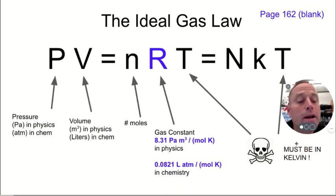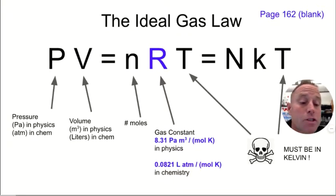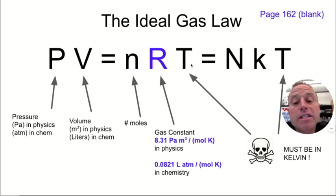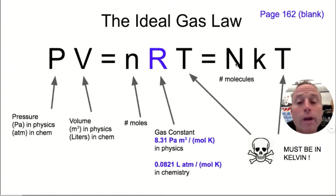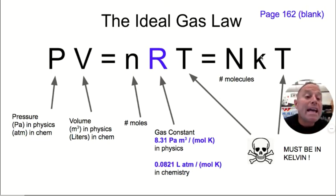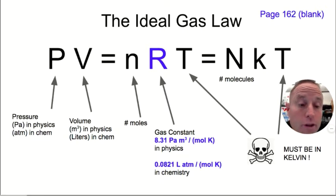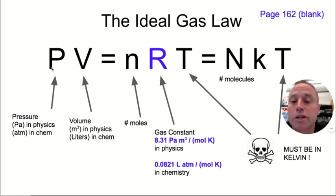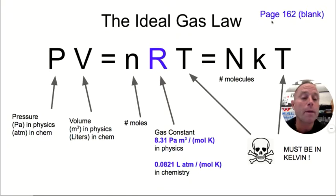A little thing to watch out for is that your temperature needs to be in Kelvin — the ideal gas law won't work unless the temperature is in Kelvin, so I put a big skull and crossbones there. A version we'll use less often: if you want to work with number of molecules instead of moles, you can write PV equals NkT, where k is the Boltzmann constant from the definition of temperature, three-halves kT.